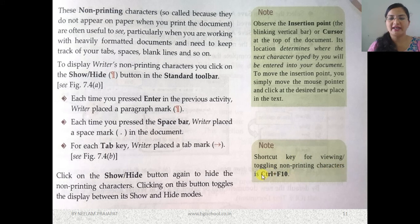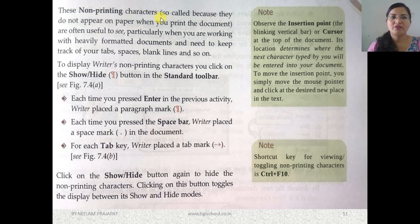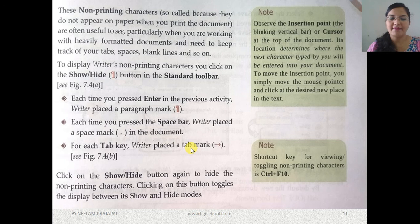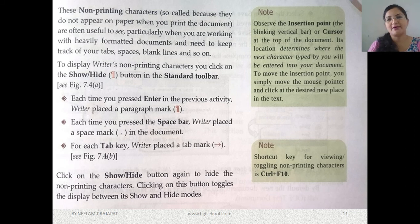The shortcut key for toggling non-printing characters is Ctrl+F10. The three non-printing characters are the space key, Enter key, and Tab key. When you press the Show/Hide button on the standard toolbar, the paragraph mark, space mark, and tab mark become visible. To hide them again, press Show/Hide or use the shortcut key Ctrl+F10.